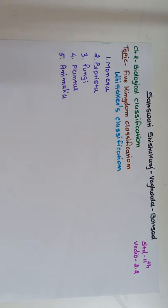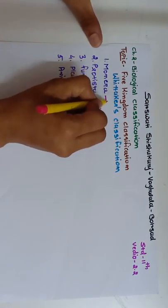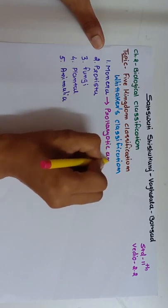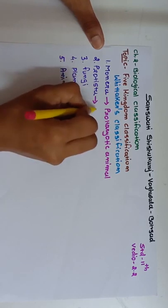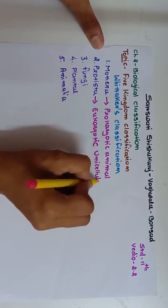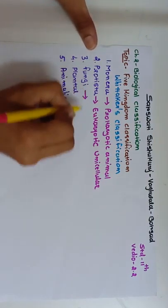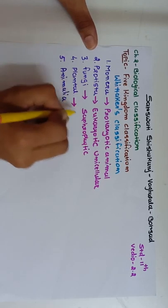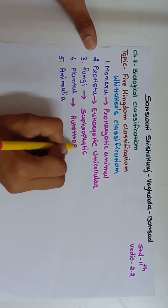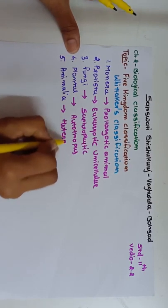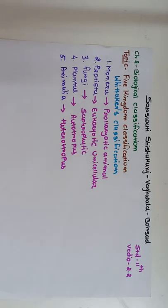Monera kingdom includes all the prokaryotic organisms. Protista includes eukaryotic unicellular organisms. Fungi include saprophytes. Plants are autotrophic, synthesizing their own food, and animals are heterotrophic, depending on other living organisms. So this is the five kingdom classification given by R.H. Whittaker.